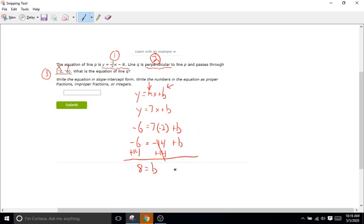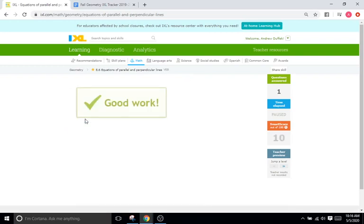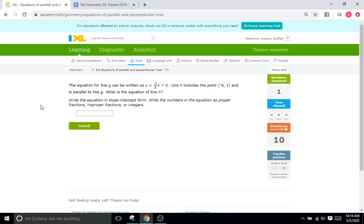Our last step here is we're going to plug that in back to our equation that we were forming. And so that leaves us with y equals 7x plus 8. And that is going to be our equation of the second line mentioned in the problem. So y equals 7x plus 8.